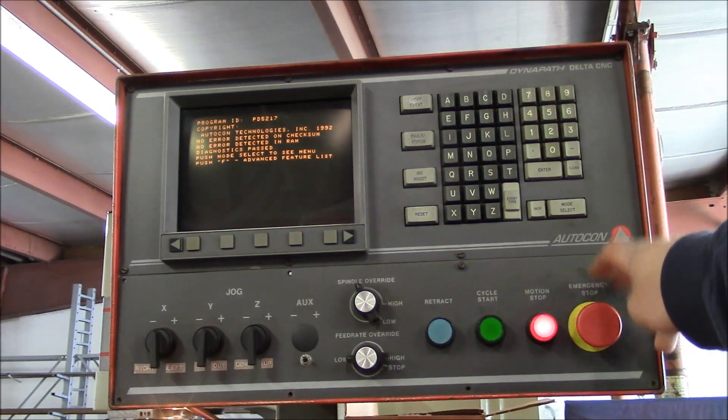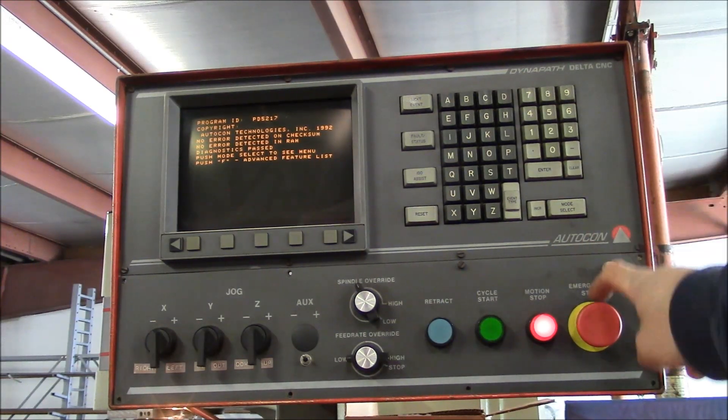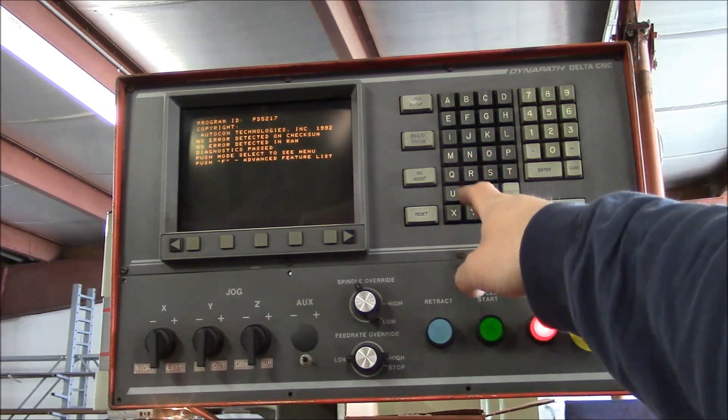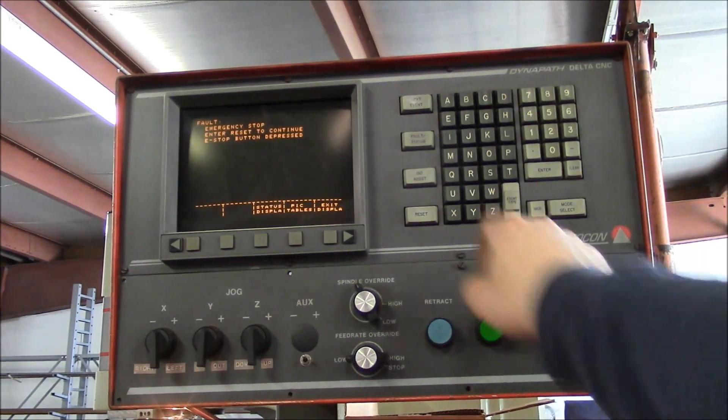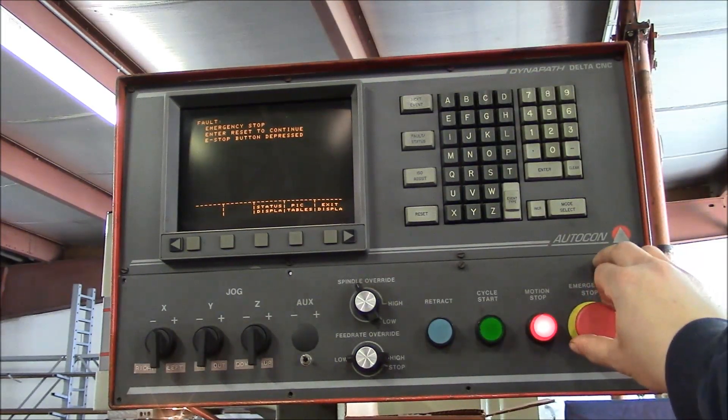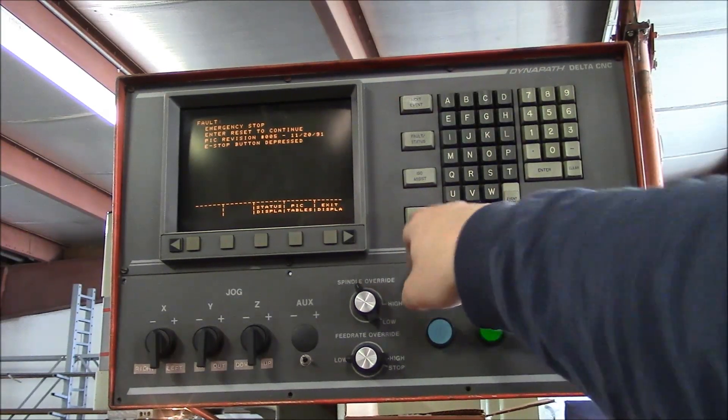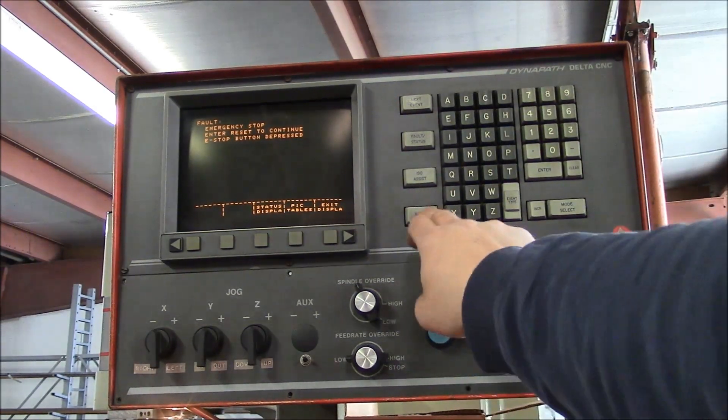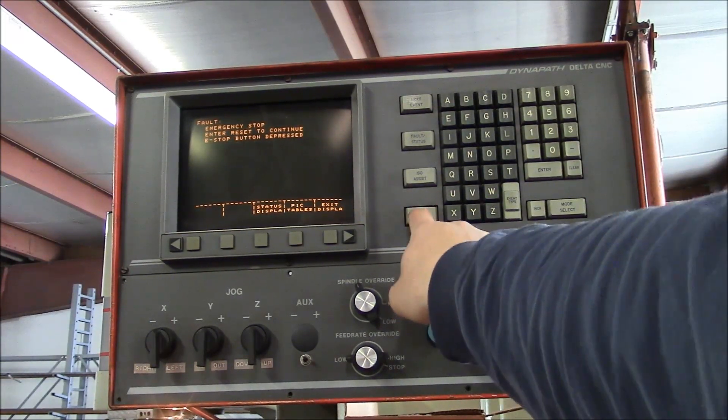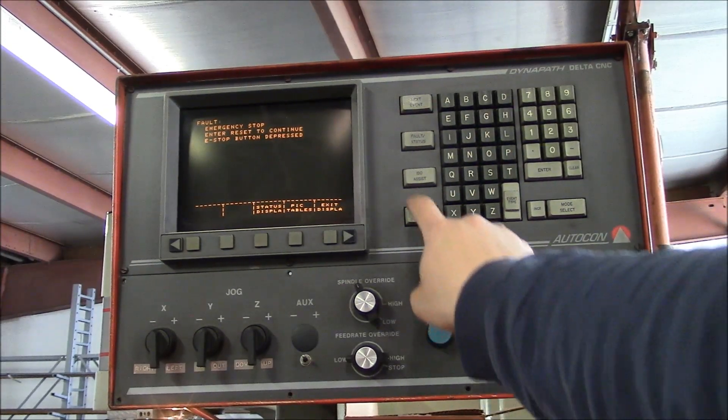Basically, the problem is that I replaced the e-stop button right here because it was broken, physically broken when I bought the machine. They had the wires jumped together. I replaced the button, but the functions are not working correctly. If you go to fault status, it tells me that we're in e-stop mode right now. The button is out, and the motion stop light's on. I should be able to hit reset right now, and you should hear the main contactor pull in, but it's not doing anything. So the control knows I'm hitting reset, but for whatever reason, it's not pulling in the main contactor.